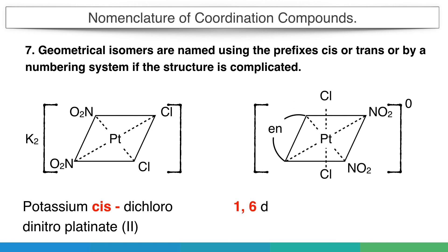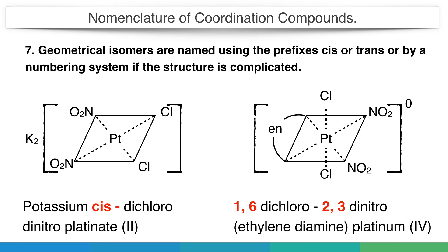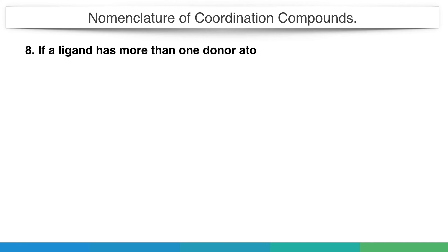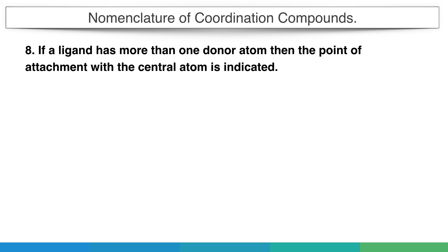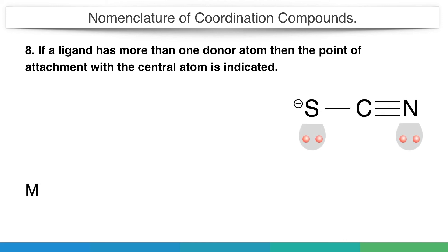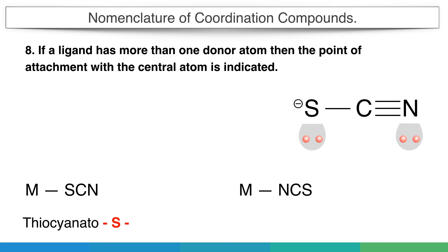Geometrical isomers are named using the prefixes cis or trans, or by a numbering system if the structure is complicated. For example, if two chloride ions are on the same side, we put 'cis' before 'dichloro', giving potassium cis-dichloro-dinitro-platinate. If the molecule is more complex, a numbering system indicates the position of ligands, for example 1,6-dichloro-2,3-dinitro-ethylenediamine-platinum(IV). If a ligand has more than one donor atom, the point of attachment is indicated — thiocyanate can bond via sulfur as thiocyanato-S or via nitrogen as thiocyanato-N.